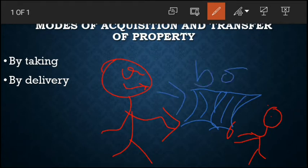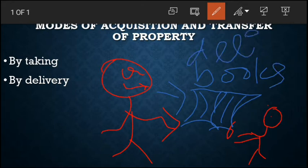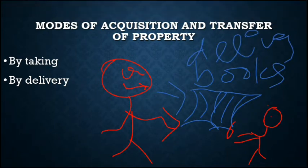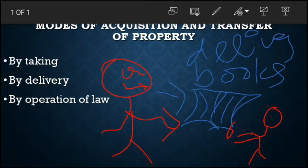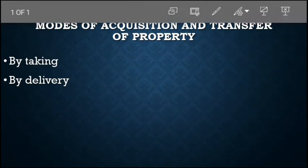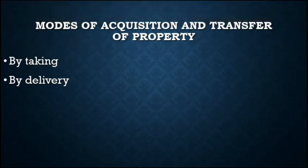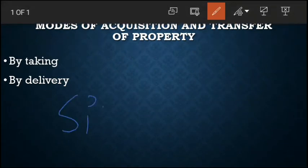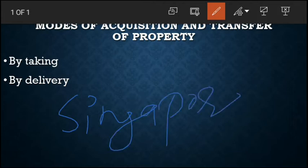Now I touch it and that's mine — that is called by delivery. For example, a teen branded mobile: I got a branded mobile from Singapore, which is actual delivery. I touch it and the mobile is mine. So this is called by delivery — a mode of acquisition of property.